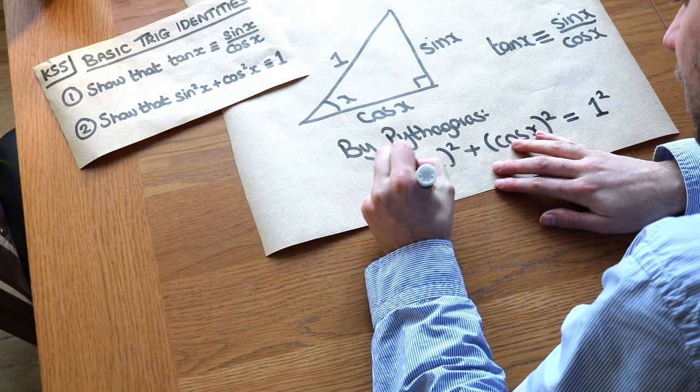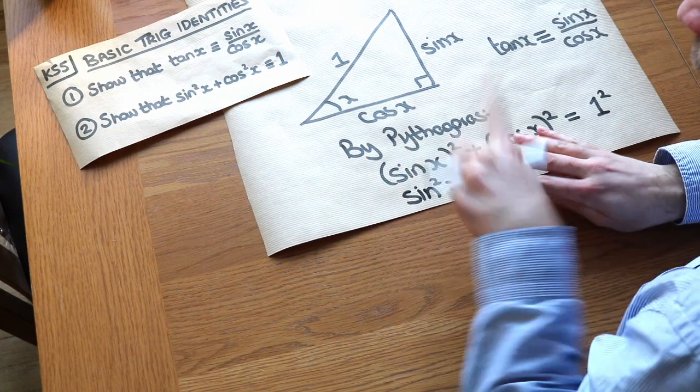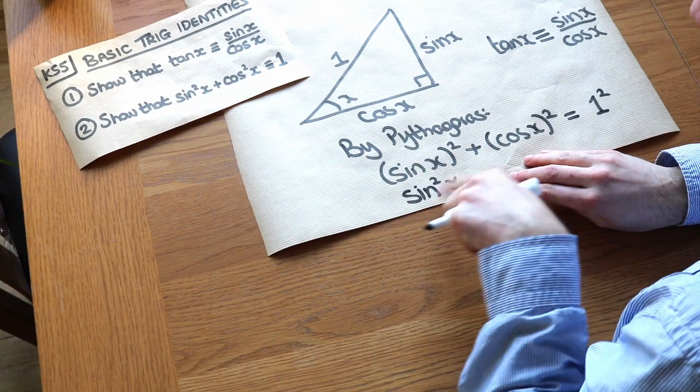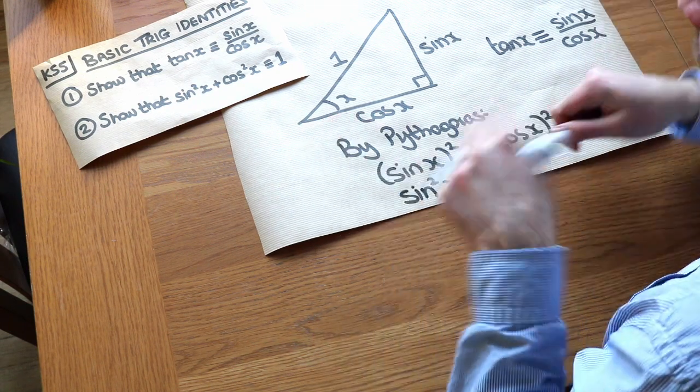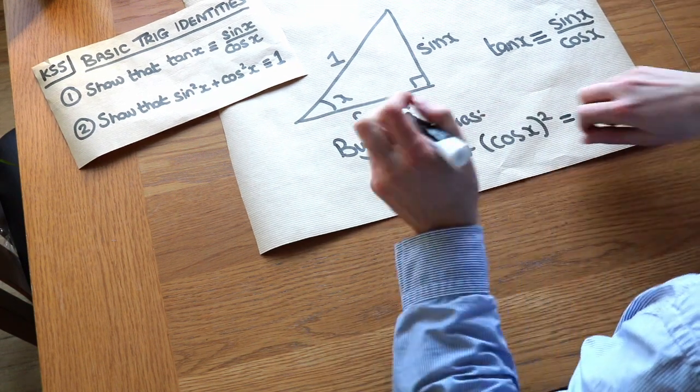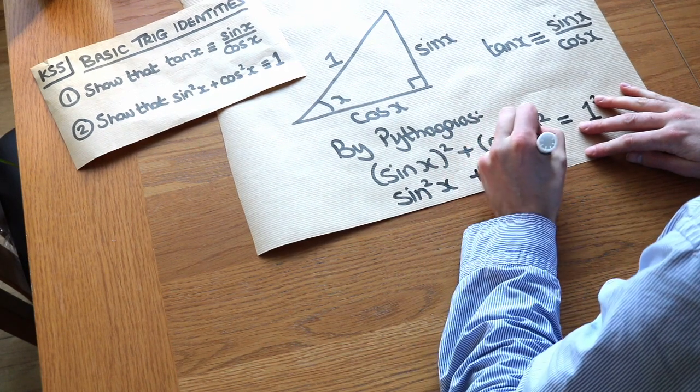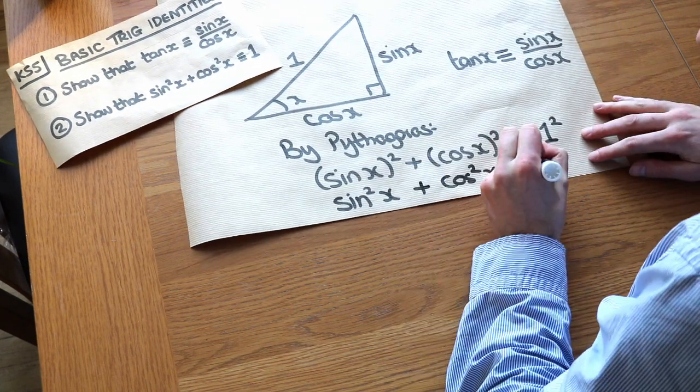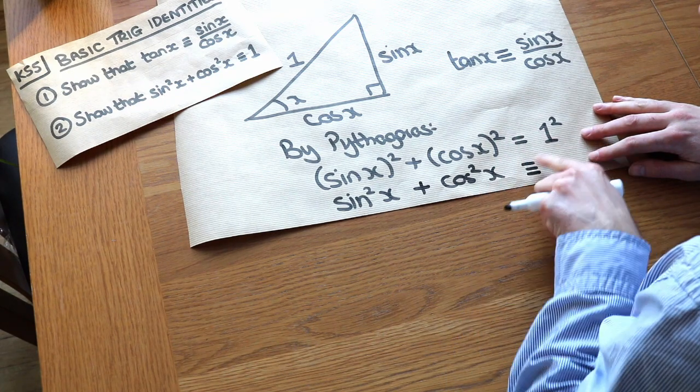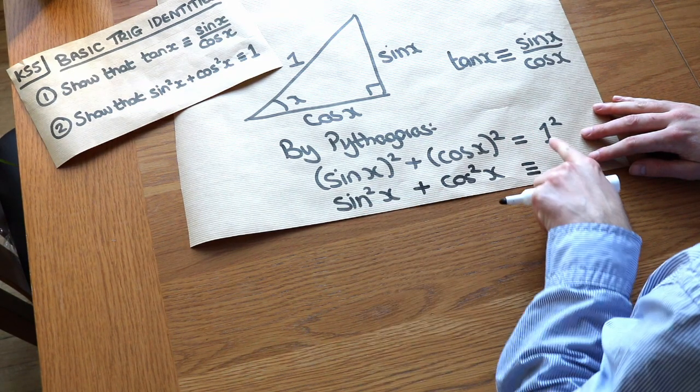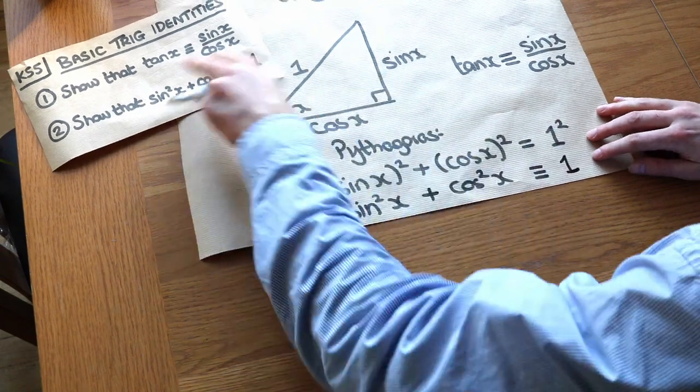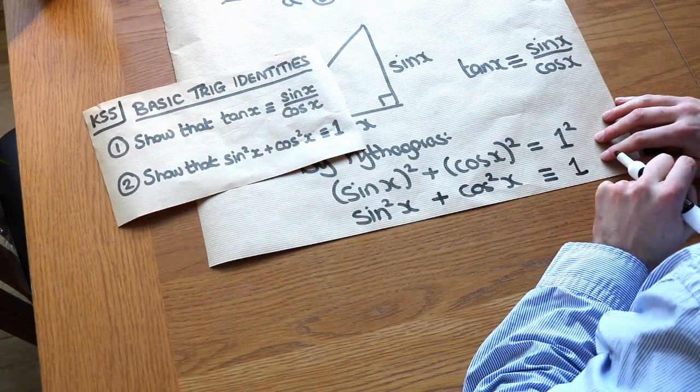And that just means sine of x all squared. It doesn't mean the sine is being squared. That doesn't make any sense. It means that the sine of x is being squared. And similarly, this is going to be cos squared of x. And we can do this as a triple equals, because this will always be equal to one, regardless of what x is. And one squared is equal to one. And that proves that second identity here.